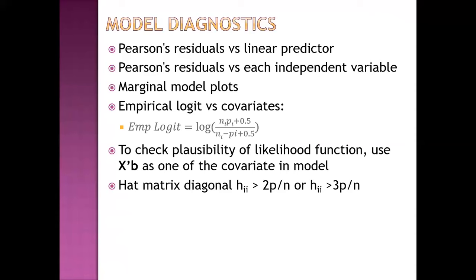Model diagnostics is done to test our assumptions. Diagnostic graphs and techniques include Pearson's residual versus linear predictors, Pearson's residual versus independent variables, marginal model plots, and empirical logit versus covariates. To check plausibility of the likelihood function, we can use a matrix calculation. The hat matrix diagonal — if it is more than 2p/n or 3p/n — is significant and indicates a leverage effect.